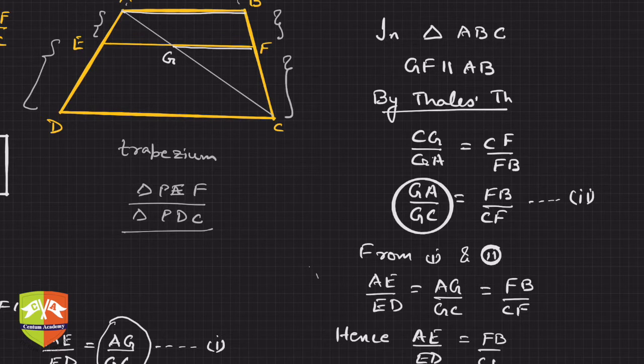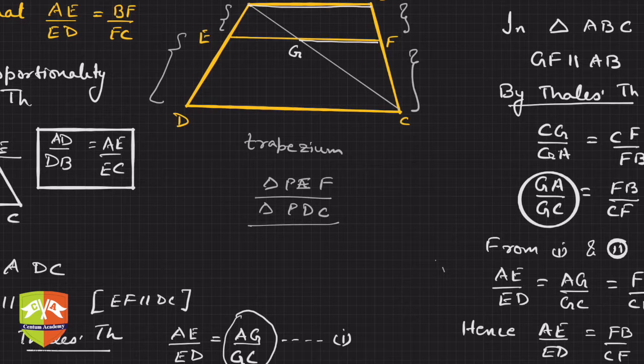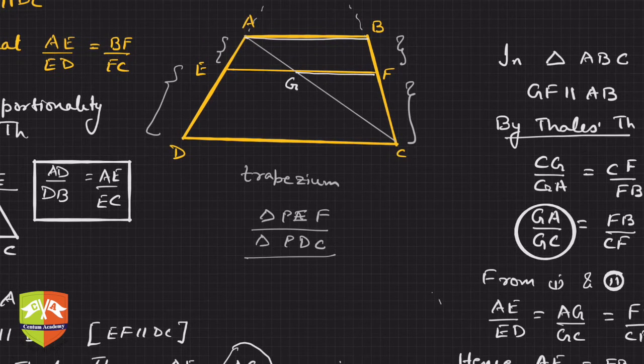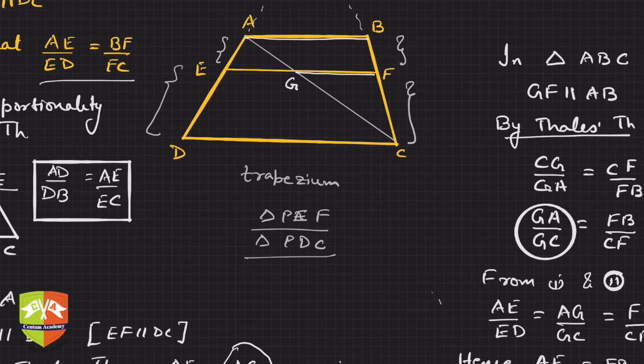Hence AE by ED is equal to FB by CF, and this is what we have to prove, isn't it? So we have to prove AE by ED is BF or FB by FC, so this is what we needed to prove.